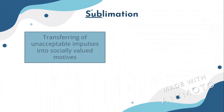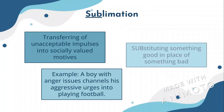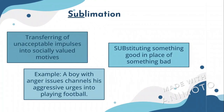Sublimation is transferring unacceptable impulses into socially valued motives. An example is a boy with anger issues who channels his aggressive urges into playing football. Sublimation is substituting something good in place of something bad.